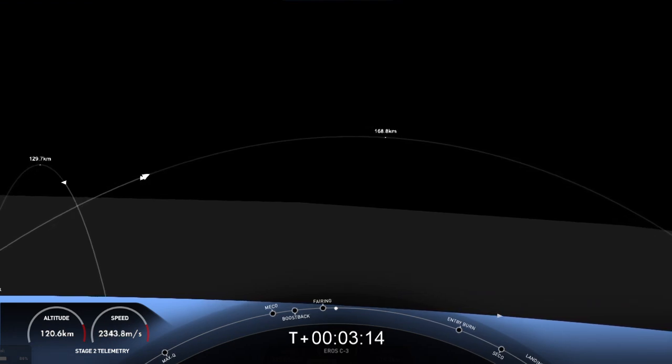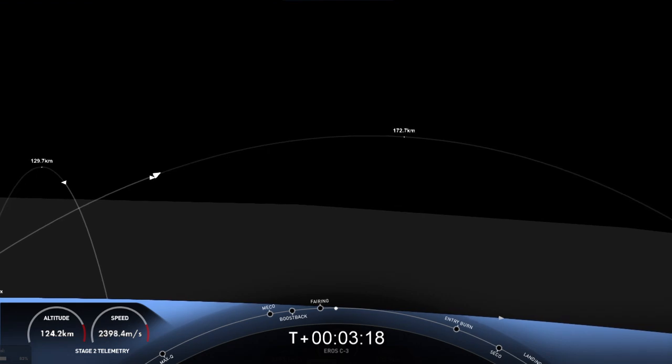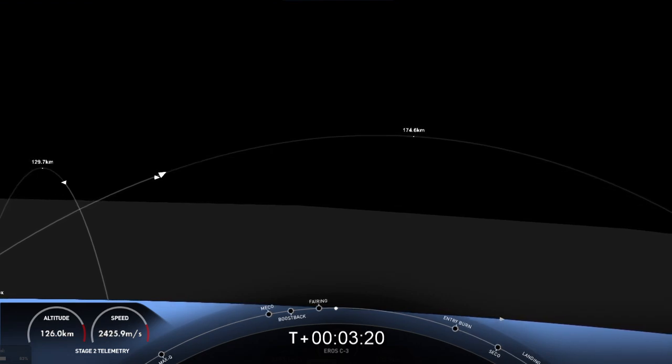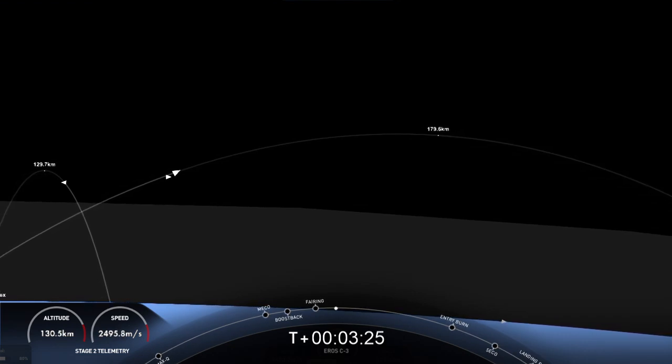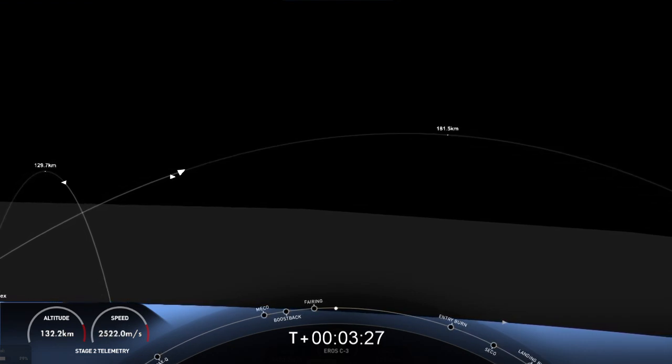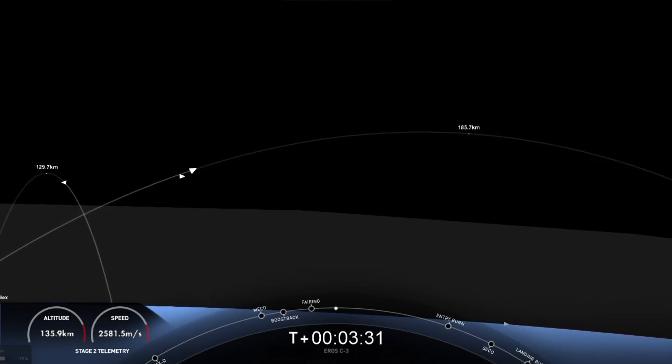Now, it is T plus 4 minutes into launch, and in order to complete today's land landing, the first stage has two more burns left. Next up is the entry burn, and that's where three of the Merlin engines will reignite, and this helps to slow the stage down as it re-enters into the upper part of the Earth's atmosphere.